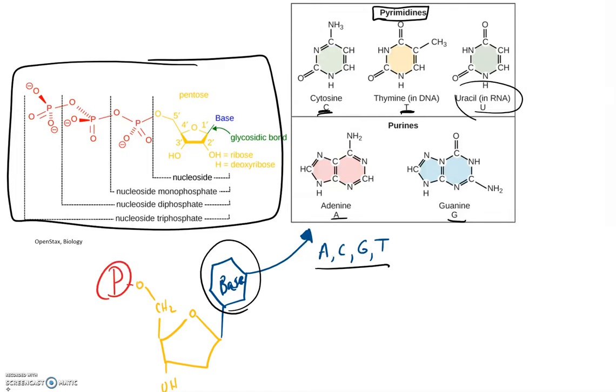uracil is actually a base that's found in RNA. But all three of these are a single ring structure. The pyrimidines,